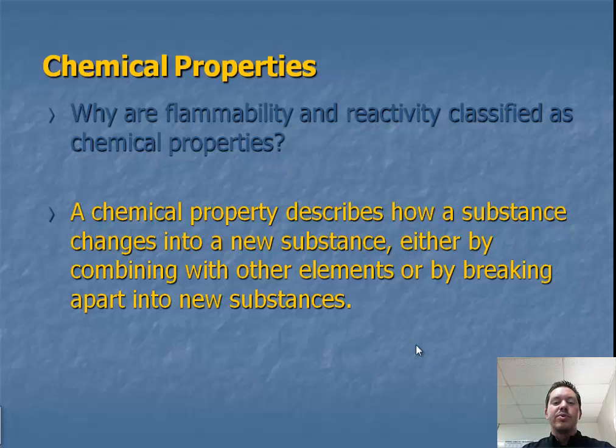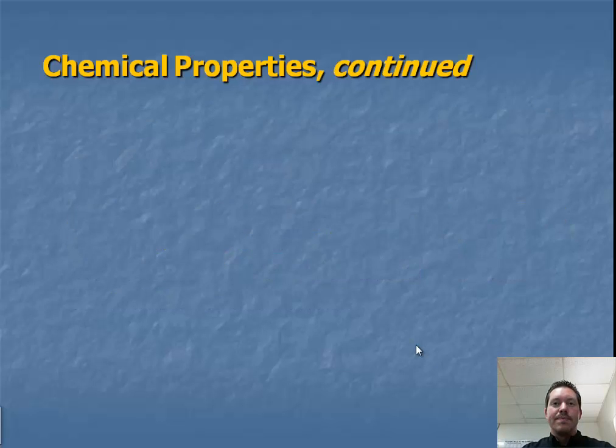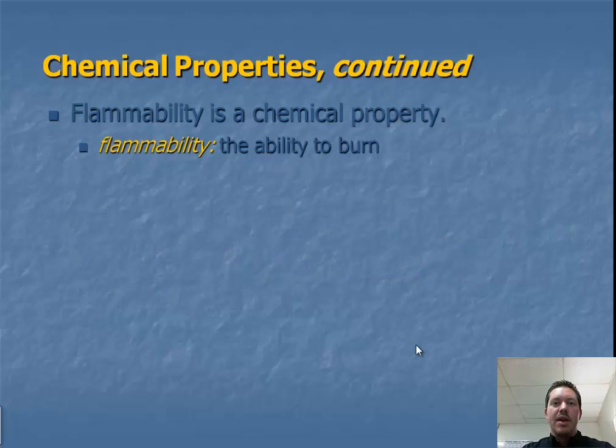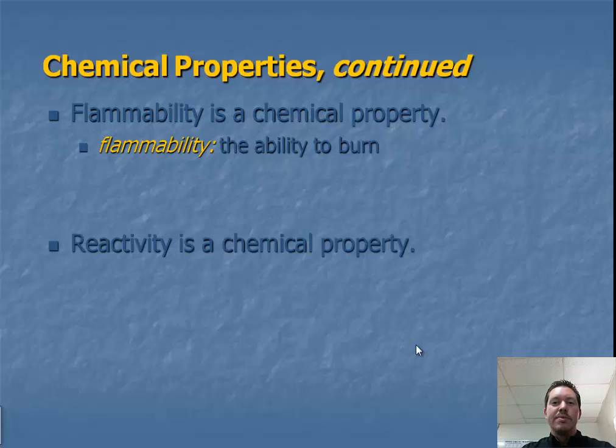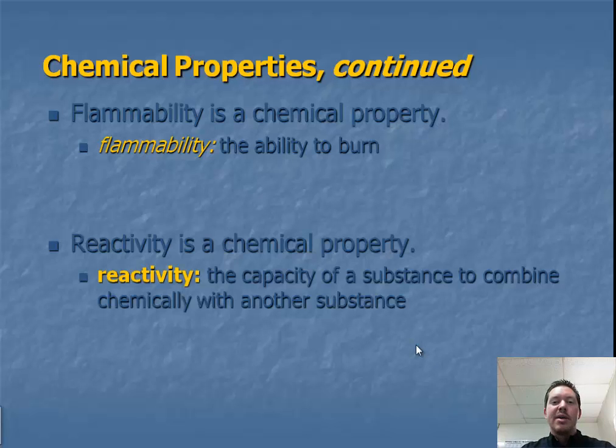When you think about chemical properties, we're getting something new. And flammability is a chemical property. It's the ability of a substance to burn. And reactivity is a chemical property as well. It's the capacity or ability of a substance to combine chemically with other substances.